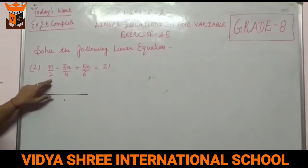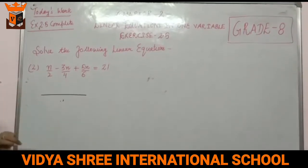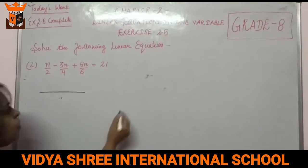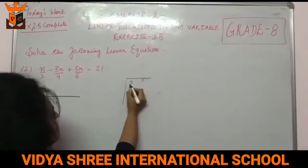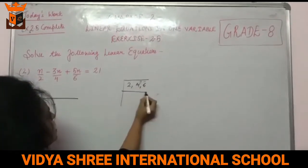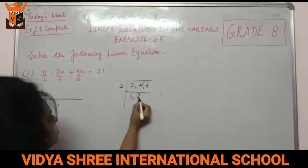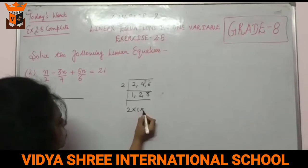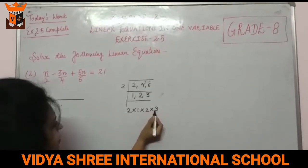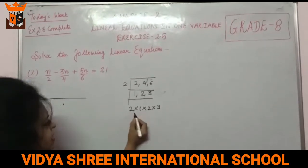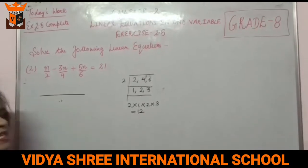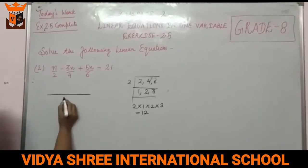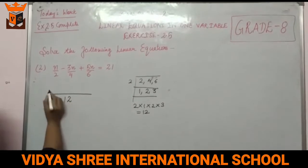So first we will take the LCM of 2, 4, and 6. The LCM comes out to be 12 — because 2 times 6 is 12, 4 times 3 is 12, and 6 times 2 is 12.